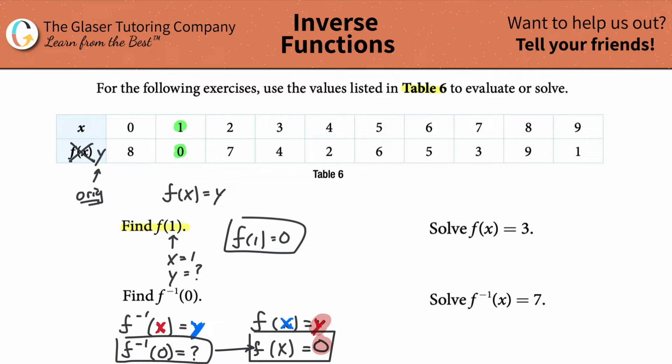Now the reason why I want to do that is because my table is in terms of the original function, not the inverse function. So now what this is telling me is that I have to look on the table for where my Y value is equal to zero. So where is the Y value? Remember I crossed the side, I said Y. Okay.